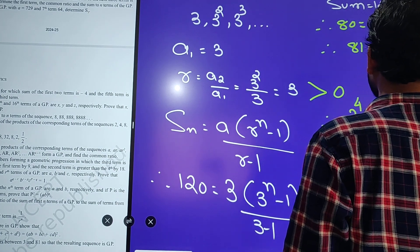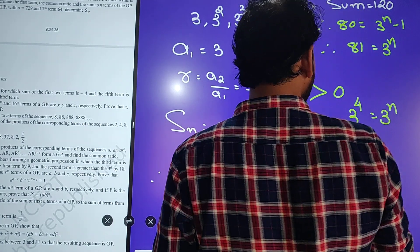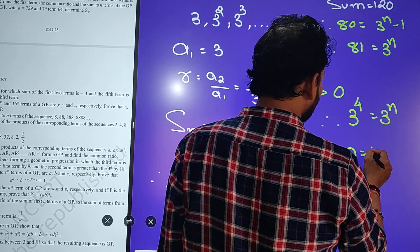So 3 raise to 4, 81 ho ta hai, or 3 raise to n. Base same hai, equal to ka sign hai, toh hum bol dehenge ke n is equals to 4.